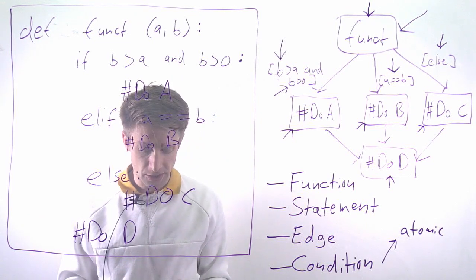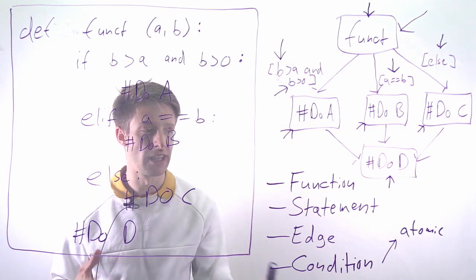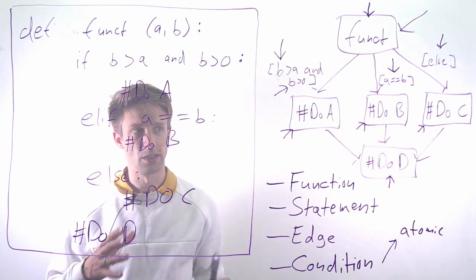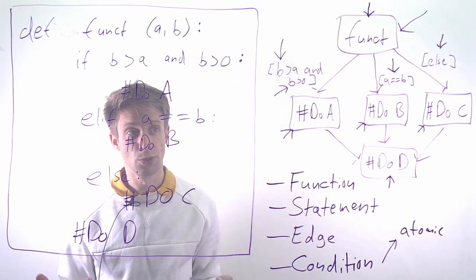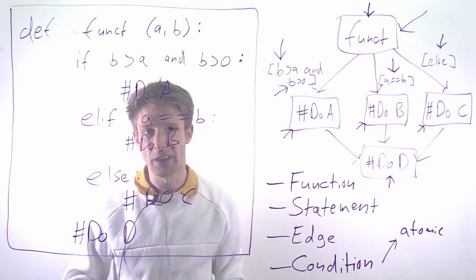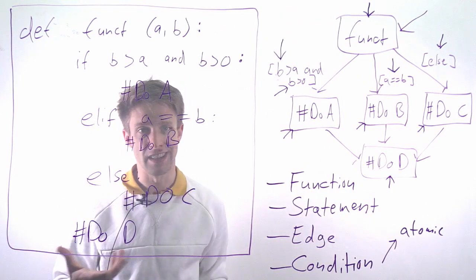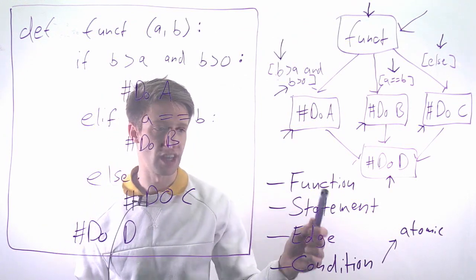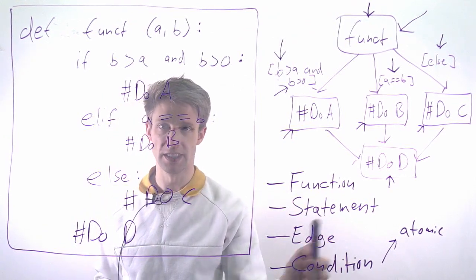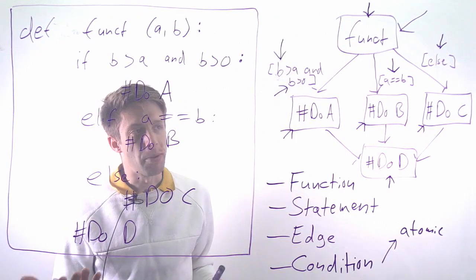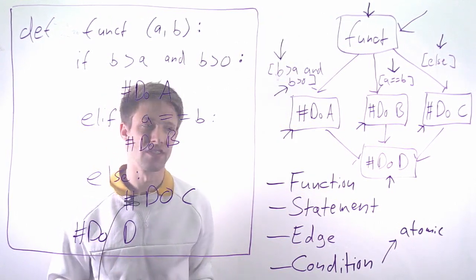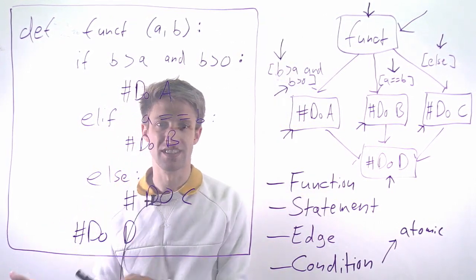We have these coverage criteria because you can calculate them automatically. If you have automated tests, tools nowadays are able to run all the tests and automatically record the different coverages. You very quickly get a number that says you have covered 88% of the statements.